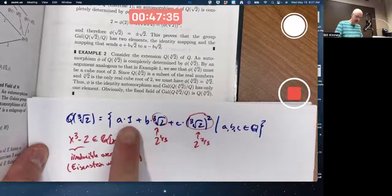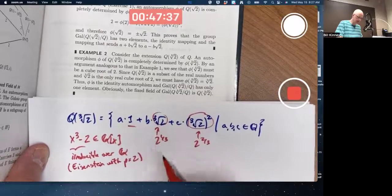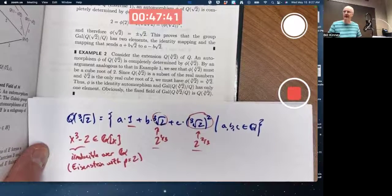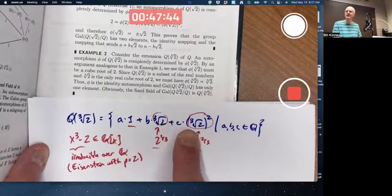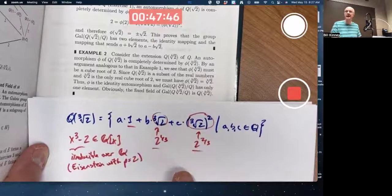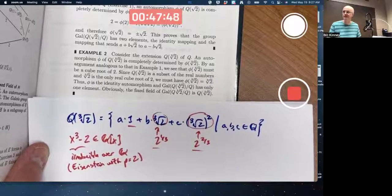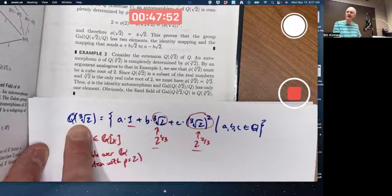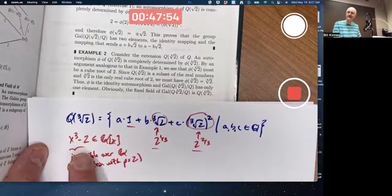It turns out that the three numbers 1, 2 to the 1 third and 2 to the 2 thirds are linearly independent over the rationals. The only way such a linear combination like this is going to be the number 0 is if a, b, and c are all 0. And it spans the entire set. It is ultimately then a basis for this.